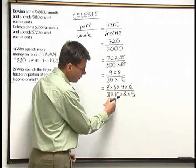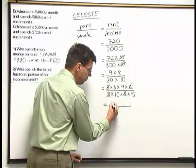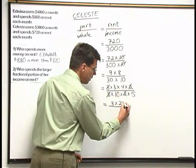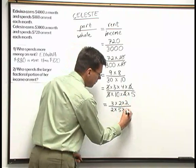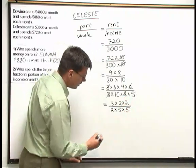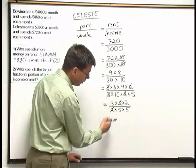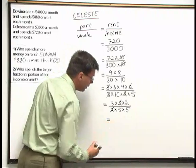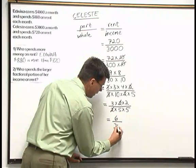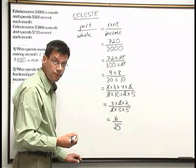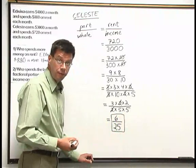Since 4 is not prime, I can break it down further, and the 10 below is also not prime. Continuing: above I have 3 times 2 times 2, and below I have 2 times 5 times 5. I can cancel another 2 above with a 2 below. Now I only have prime numbers above and below with no matching pair, so I'm done. Multiplying back: 3 times 2 is 6 above, and 5 times 5 is 25 below. The reduced fraction is 6 twenty-fifths — Celeste spends 6 twenty-fifths of her monthly income on rent.